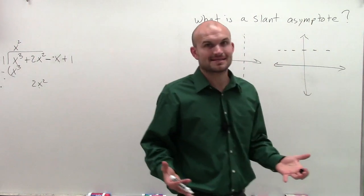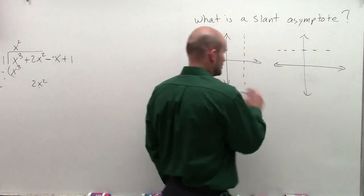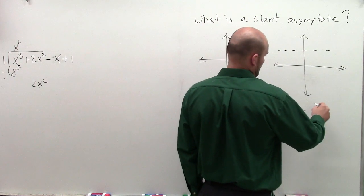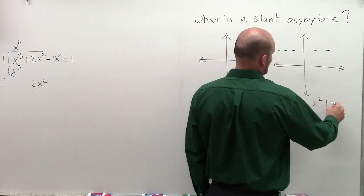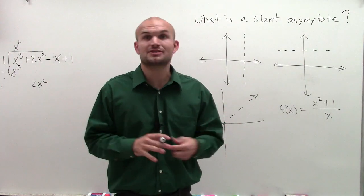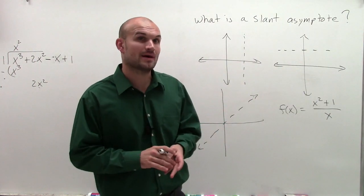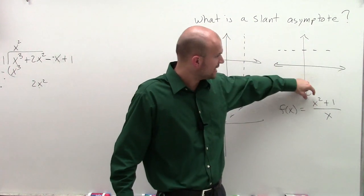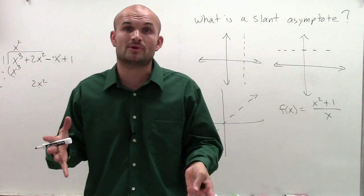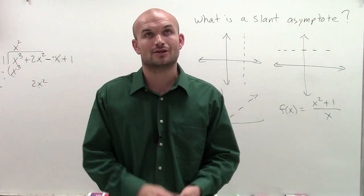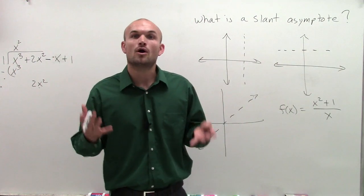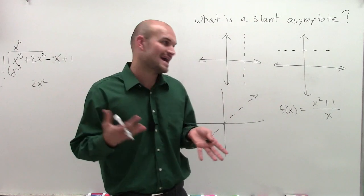So when do we have slant asymptotes? Well, we have slant asymptotes when, let's say, we have f(x) equals x squared plus 1 divided by x. Whenever you're looking at a rational function, we look at the degree of our numerator and denominator. Whenever the degree in our numerator is larger than the degree in our denominator, we now have slant or oblique asymptotes.